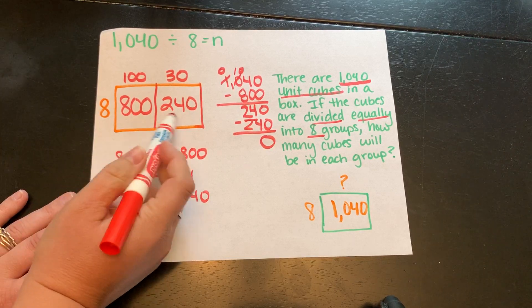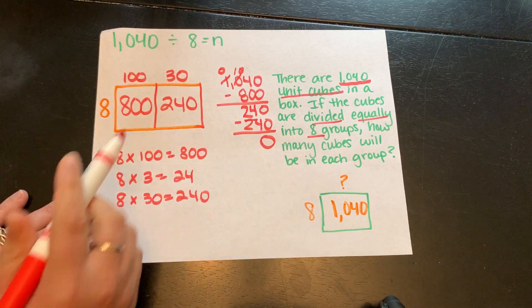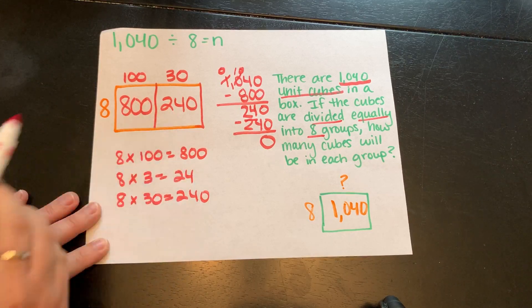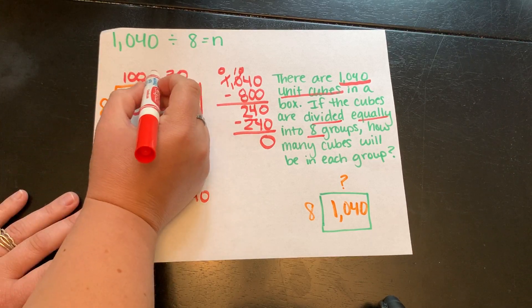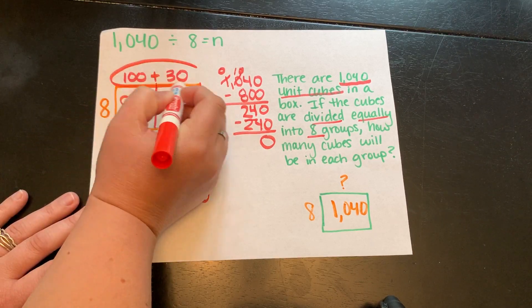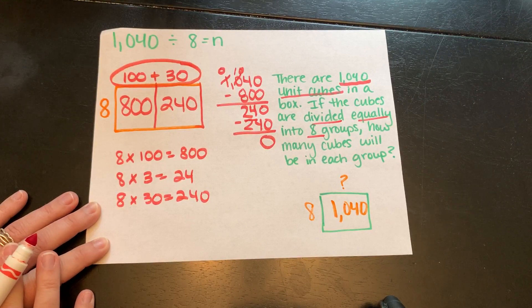I'm going to close my array because now I'm down to 0. And if I add these together, they should equal 1,040. If they don't, I need to double check. But they do. If I add 800 plus 240, it gives me 1,040. Now, if I look at the top and add my partial quotients together, that gives me my final quotient for the whole problem.